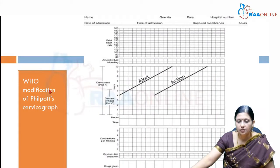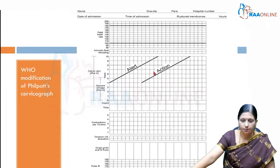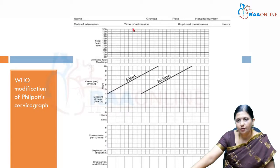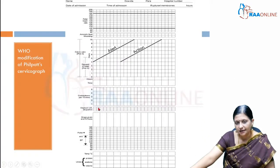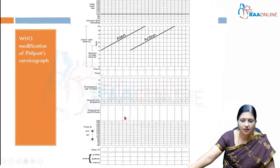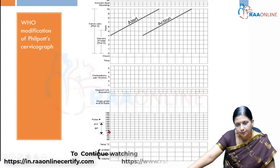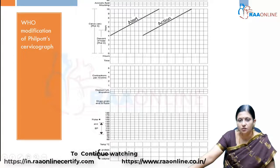This is the Philpott cervicograph, which starts at 4 centimeters and where the alert and action lines are 4 hours apart. The partogram records various patient details: name, gravida, para, UHID, date and time of admission, ruptured membrane hours, fetal heart rate, amniotic fluid color, cervix dilatation, descent of head, hours, time, uterine contractions with block shading and frequency, oxytocin given, any other drugs or IV fluids such as Ringer's lactate, pulse rate, blood pressure, maternal temperature, and urinary protein, acetones, and urinary volume output.